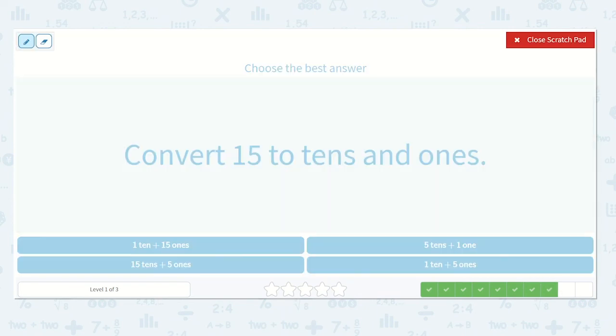Convert fifteen to tens and ones. Again, I see I have a number in my tens place and a number in my ones place. So I know I have one ten. And how many ones? Yeah, five ones. Let's look at the options they give us.